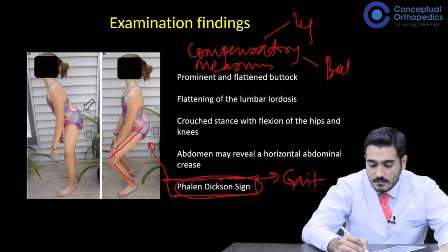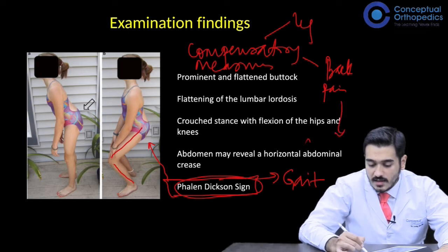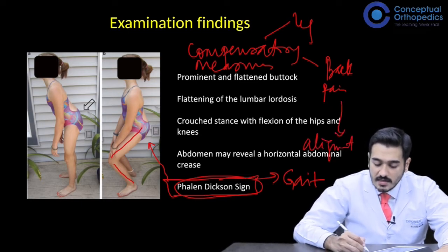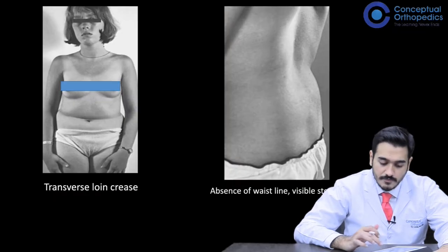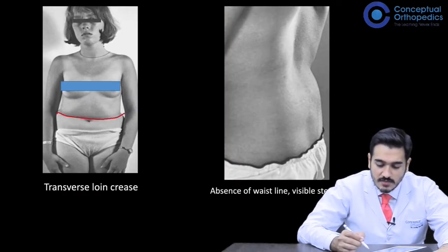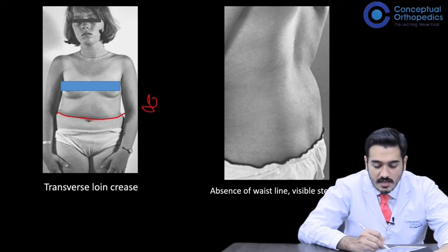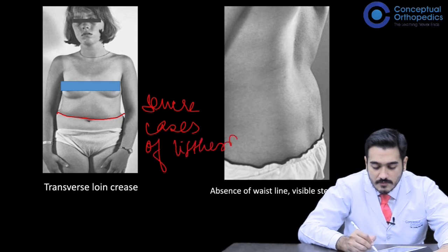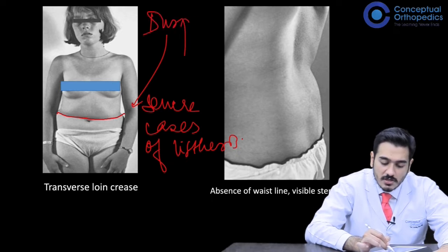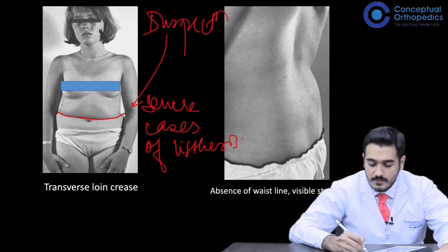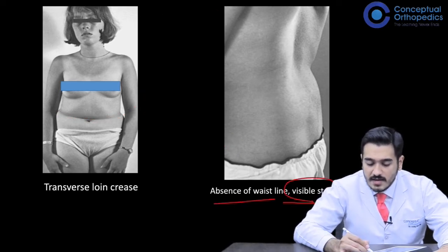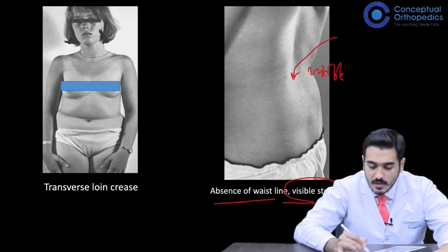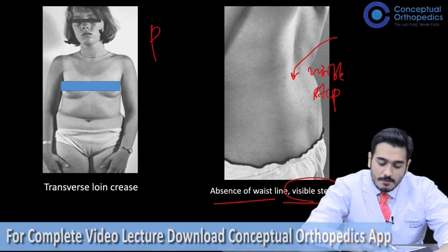The altered gait is primarily due to compensatory measures to relieve leg and back pain and to maintain alignment. The Fallen Dixon sign is essentially a gait sign in which the patient walks with an altered gait. There is also a transverse horizontal abdominal crease seen in severe cases of spondylolisthesis. The waistline is absent and in high-grade cases there is a visible step which is also palpable.